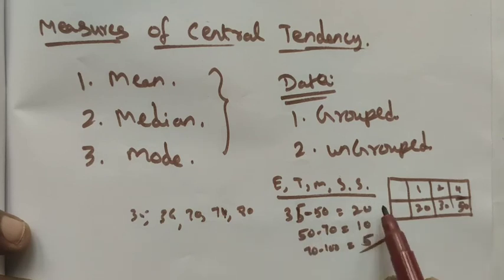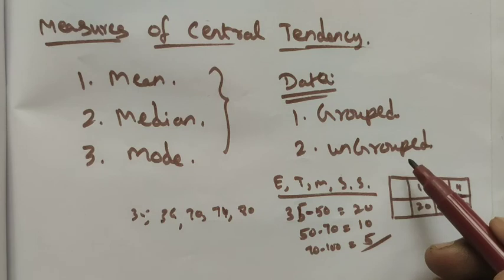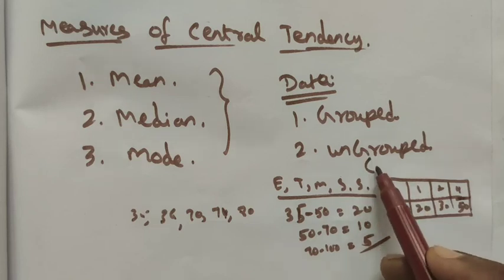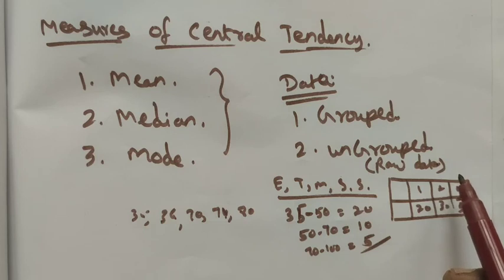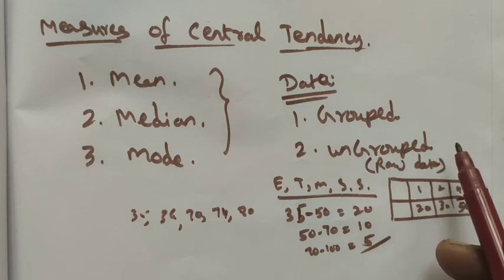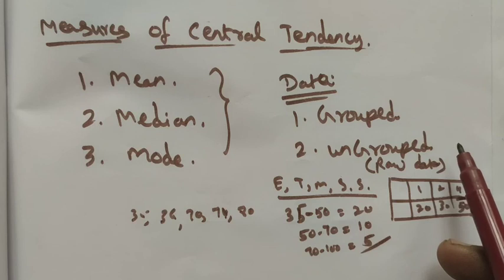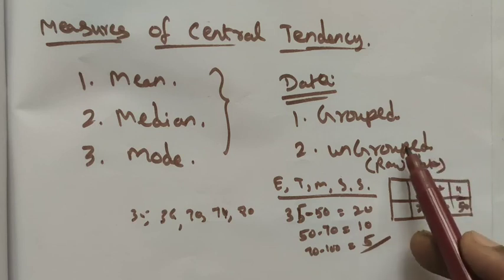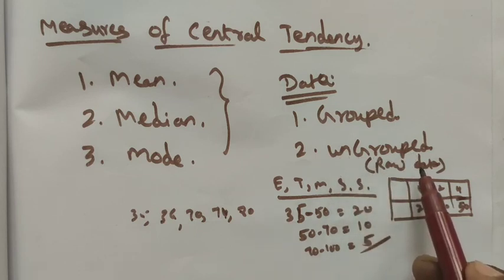Why we have discussed grouped and ungrouped data: here we have the method to find the arithmetic mean of ungrouped data, which is otherwise called raw data. Raw data means the data we first collect from the students — that is the raw data. After taking the raw data, we make it into tabular form, and particular students — 10 to 20 — are shown with particular marks. That is grouped data. So ungrouped data is also called raw data. We have two methods to find the arithmetic mean.